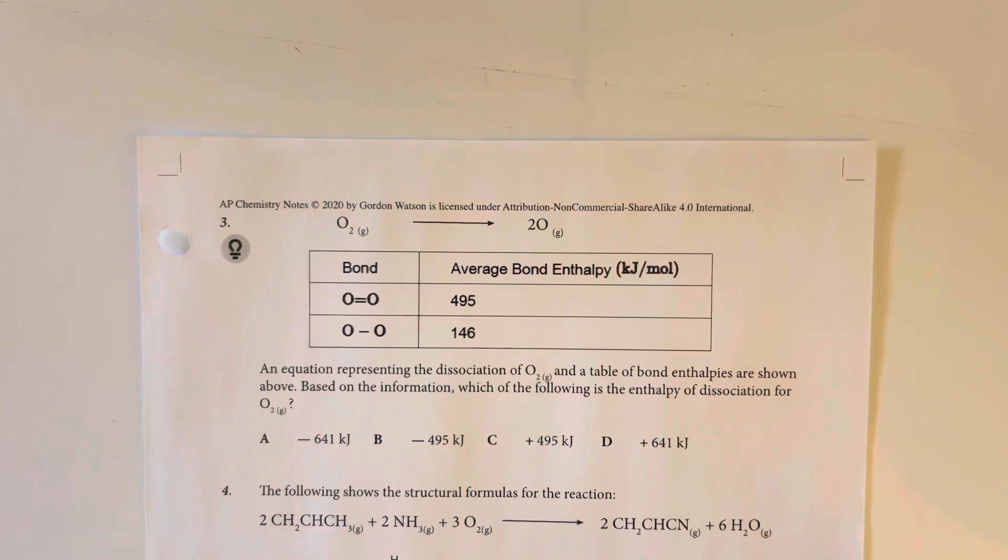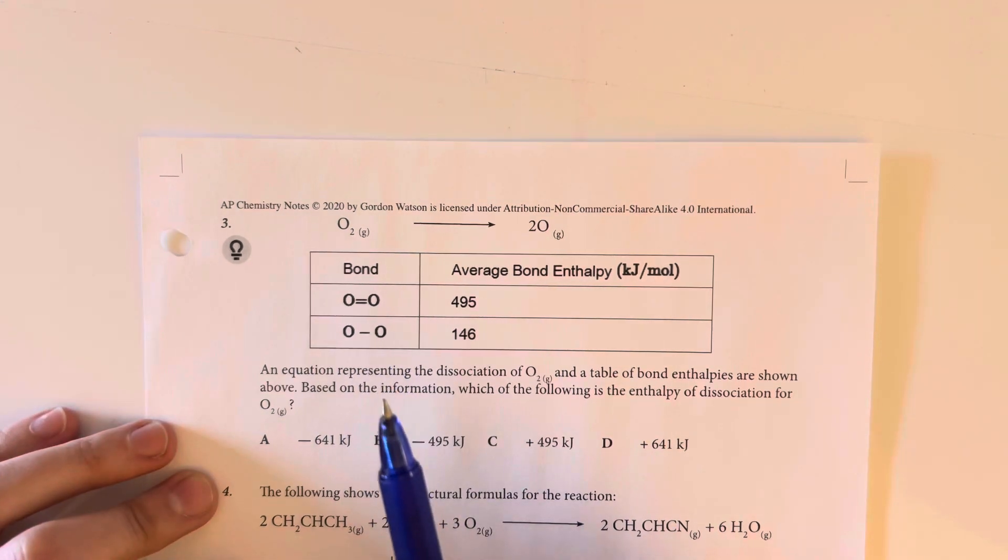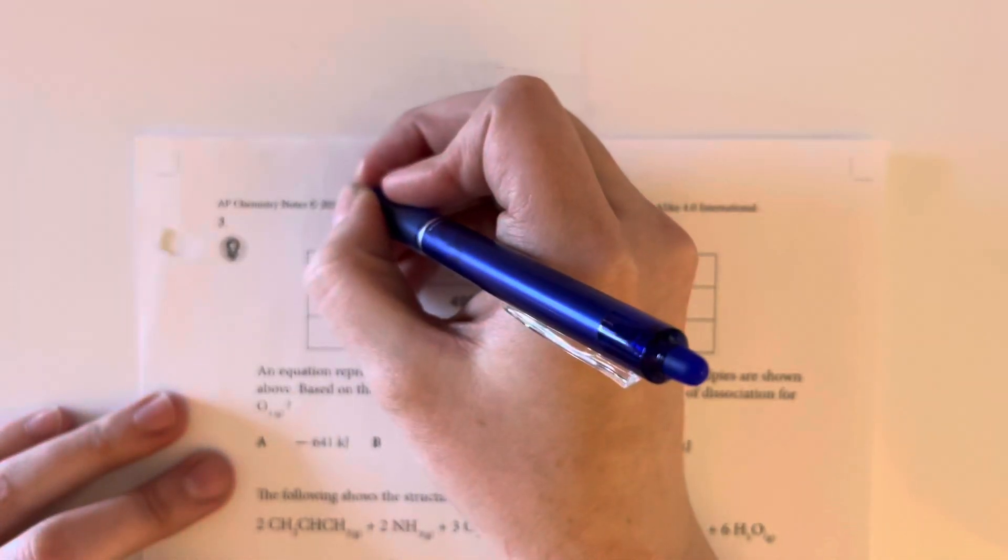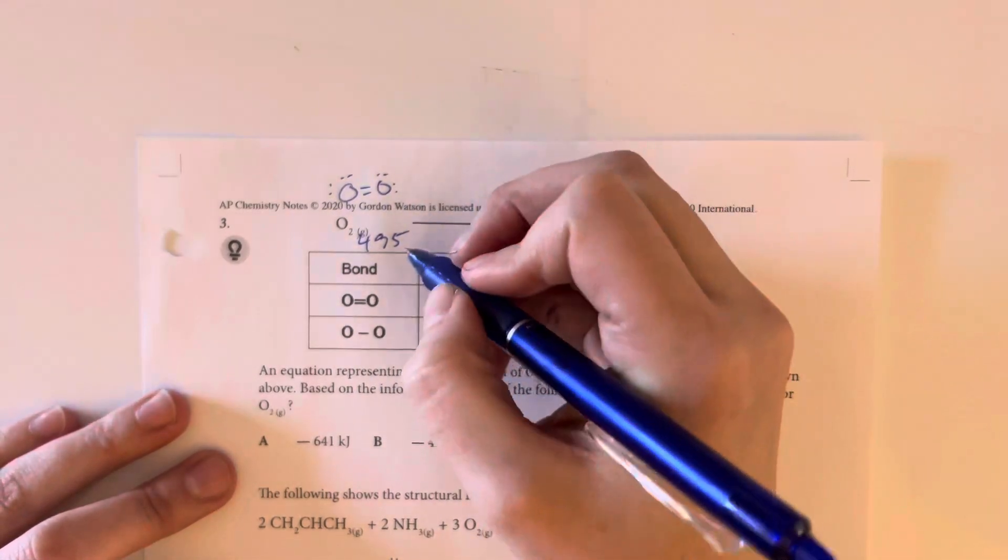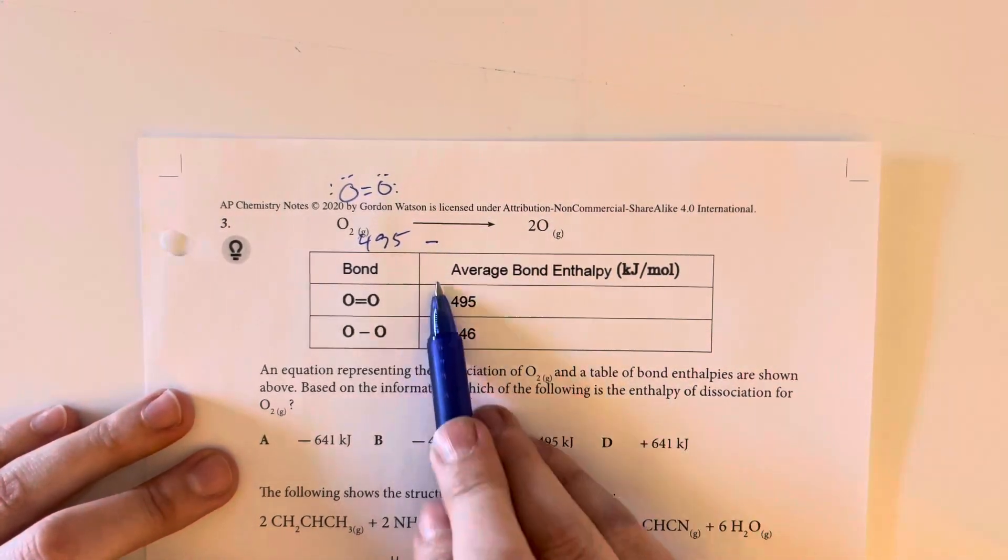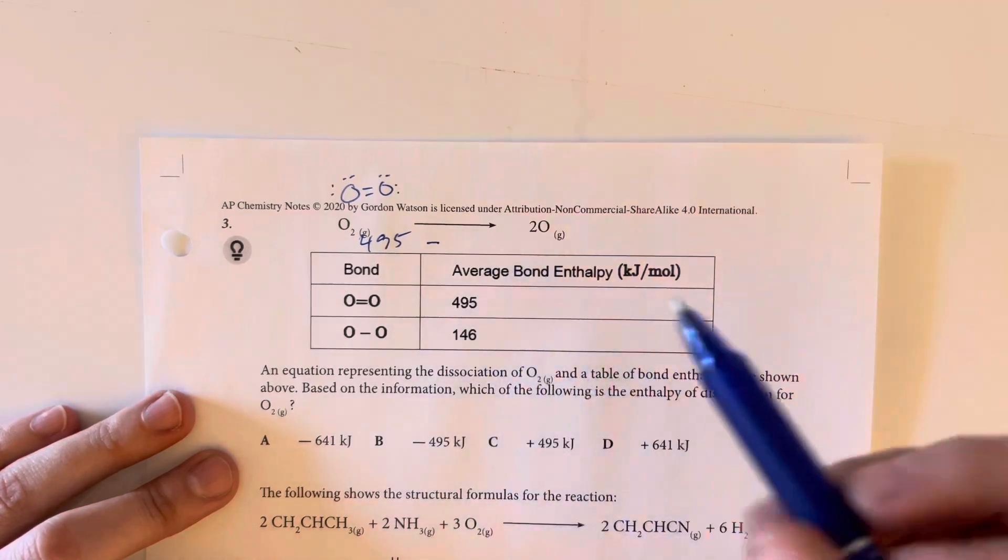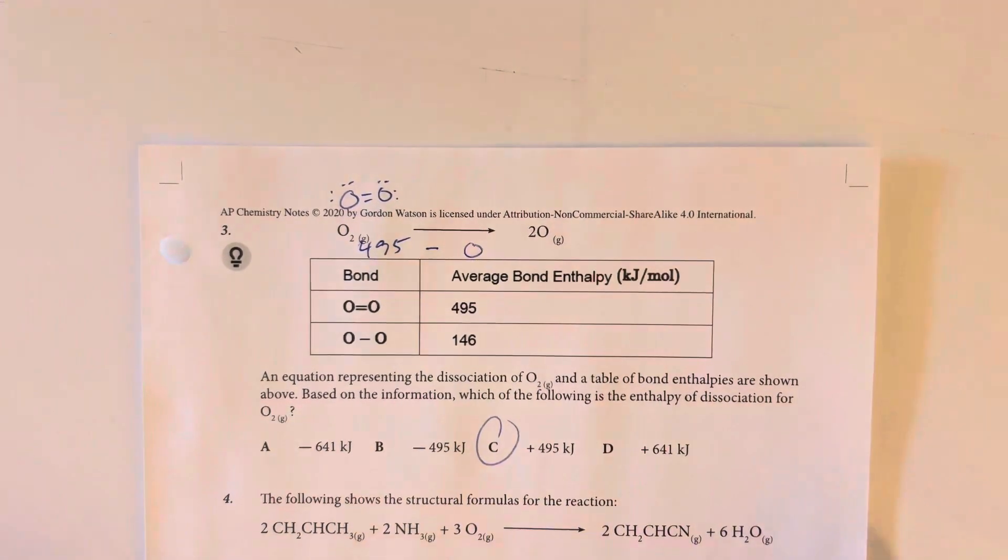An equation representing the dissociation of diatomic oxygen and a table of bond enthalpies are shown above. Based on the information, which of the following is the enthalpy for the dissociation of oxygen? Oxygen here is going to have the double bond. So we have that double bonded oxygen, and it's going to have an enthalpy of 495. We have reactants minus products. Now you might be tempted to use some of the bond enthalpies here. However, these are not bonded. We have two single oxygens that are not bonded at all. So that's going to be zero. So 495 minus zero gives me positive 495 kilojoules.